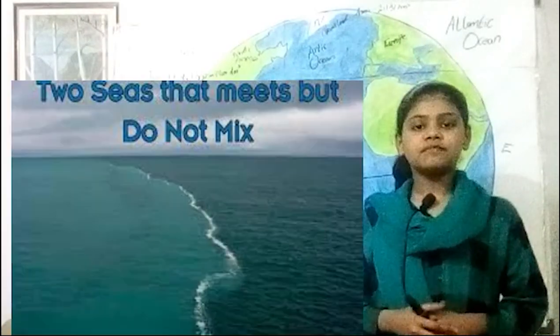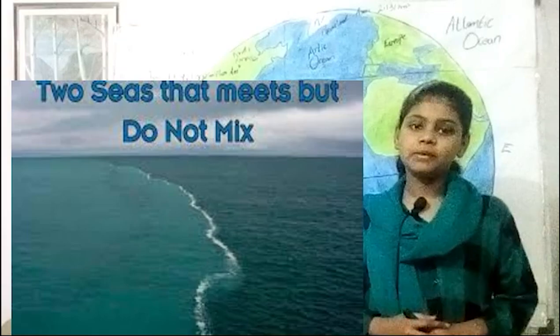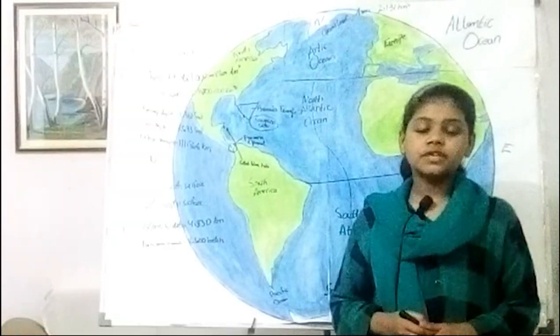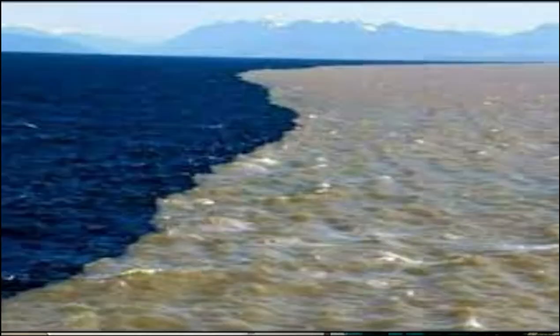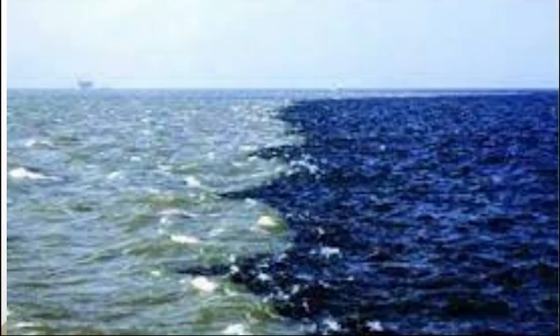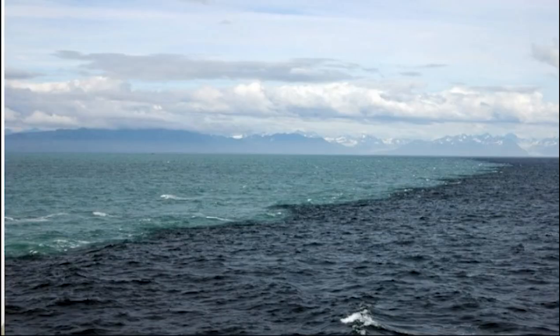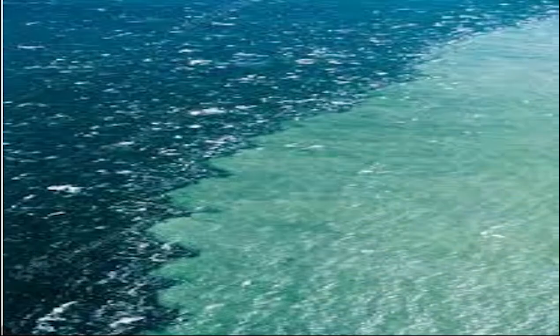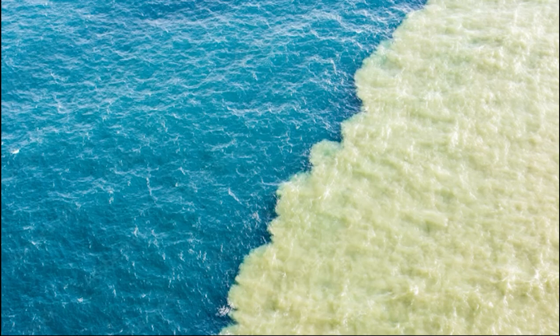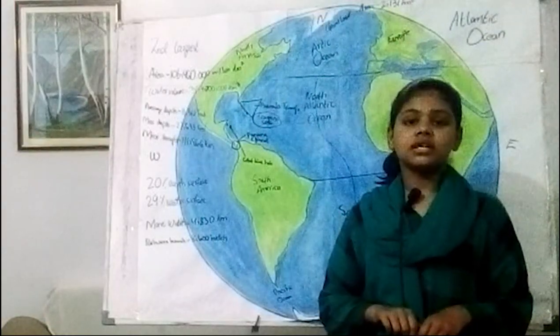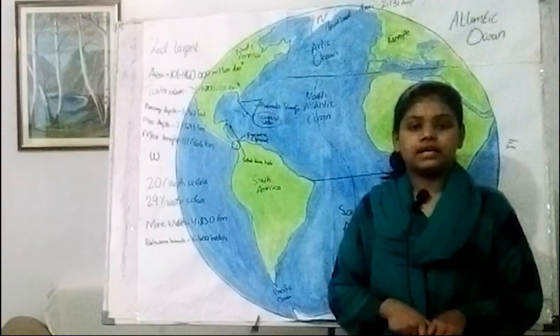Do you know why the Atlantic and Pacific Oceans don't mix? Because there is a huge difference in salinity between the clear water that comes from maritime glaciers, which is cold and low in salt, while the water in the second ocean has a high salt concentration. Therefore, the two oceans have different densities, which makes them almost impossible to mix. The Atlantic Ocean is home to more than 50 islands.